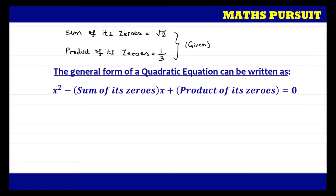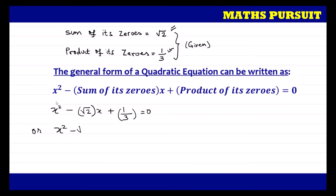The formula says: x squared minus (sum of zeros) times x plus (product of zeros) equals 0. The sum of zeros given is root 2, and the product of zeros is 1 upon 3. So substituting, we get: x squared minus root 2 times x plus 1 upon 3 equals 0. I simply replaced the values into the formula.